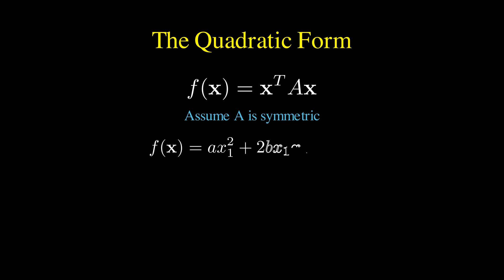Expanding this expression, using a general symmetric matrix A and vector x, we obtain a polynomial: a times x1 squared plus 2b times x1x2 plus c times x2 squared.